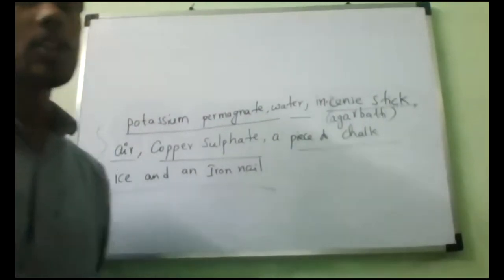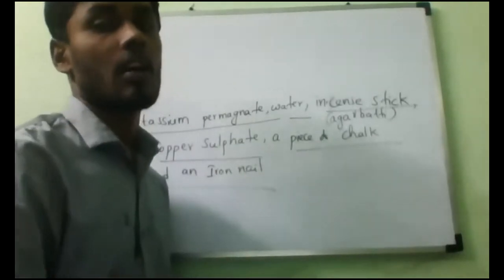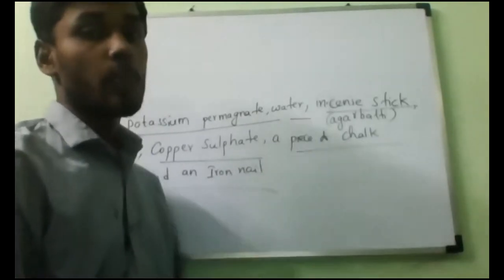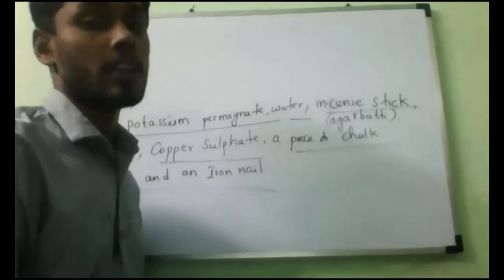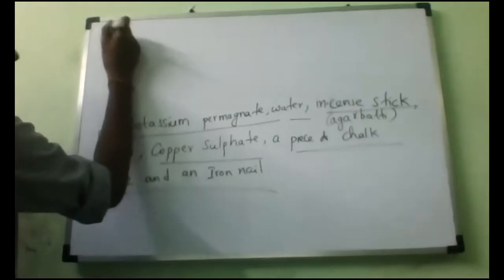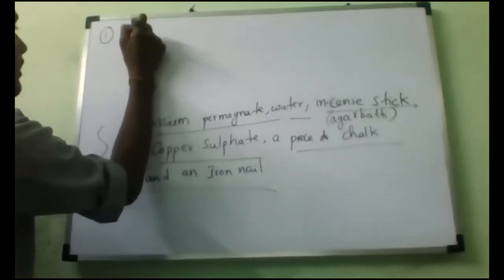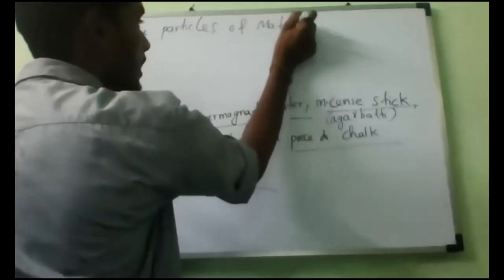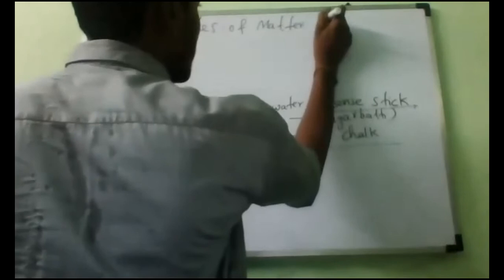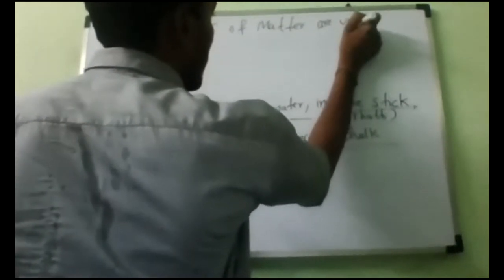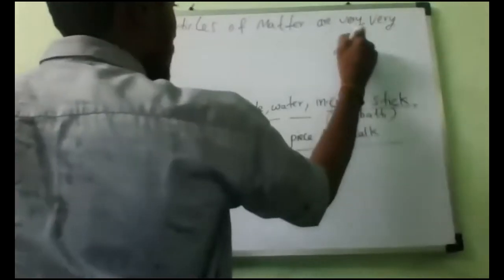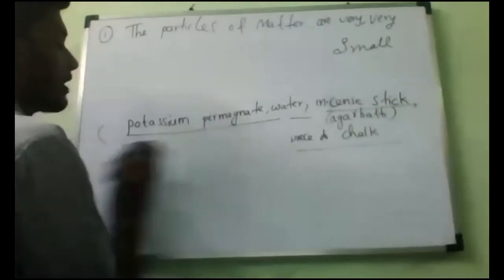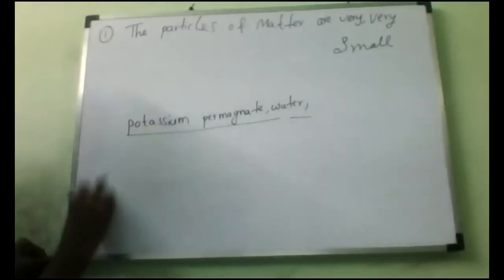The very, very small size of the particles of matter can be shown by performing an experiment called dissolving potassium permanganate in water. That is the experiment we are going to do to verify the first characteristic — the particles of matter are very, very small. For this, we need to take two requirements: potassium permanganate and water.